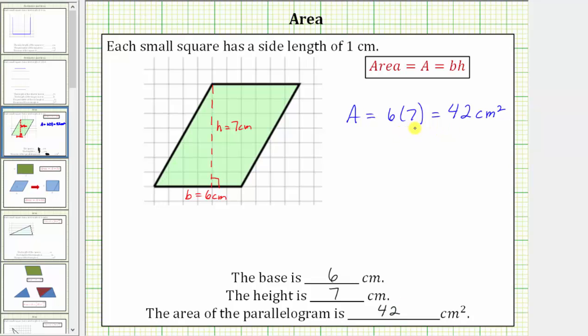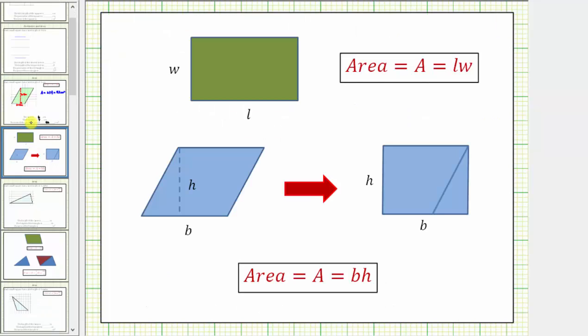Before we go though, I do want to mention where this formula comes from. We can always take a parallelogram, cut off a triangle from one side, and form a rectangle, which is the reason why this area formula looks just like the area formula for a rectangle. We know when we have a rectangle, the area is equal to length times width.